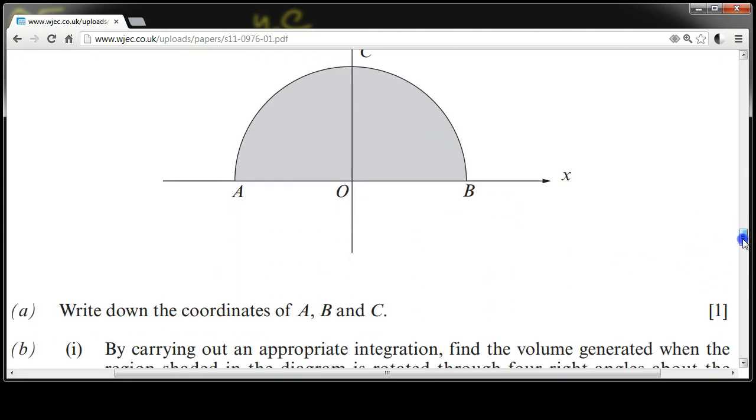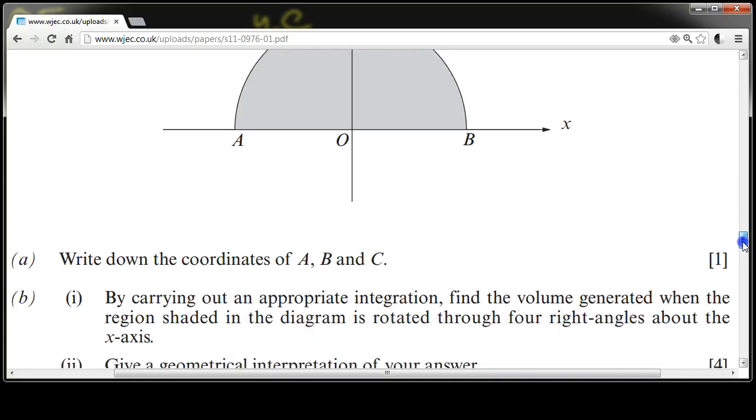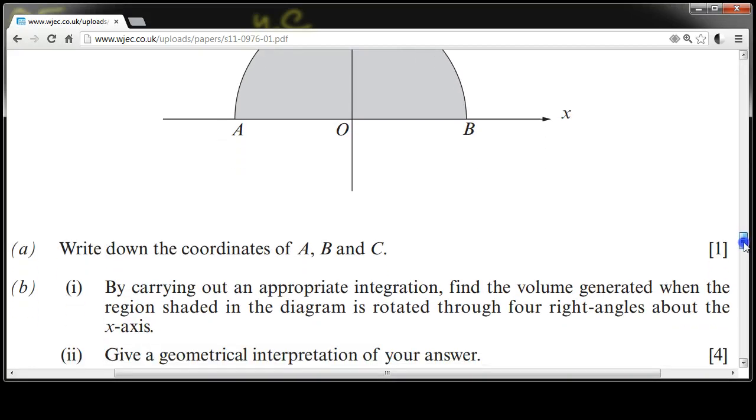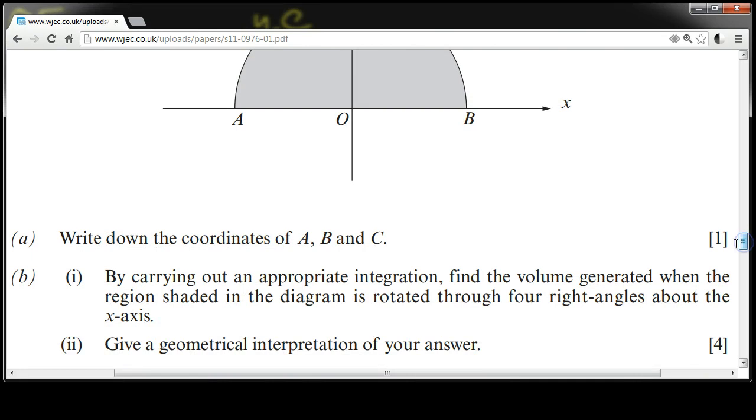Write down the coordinates of A, B, and C. By carrying out an appropriate integration, find the volume generated when the region shaded in the diagram is rotated through four right angles about the x-axis. Give a geometrical interpretation of your answer.